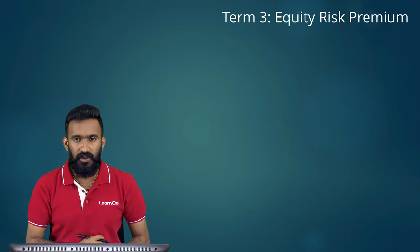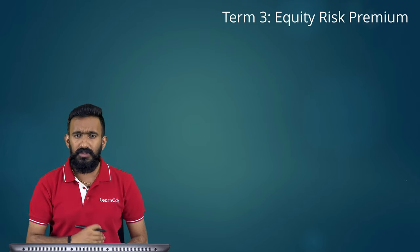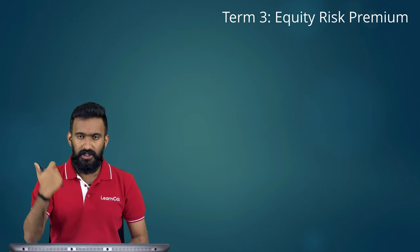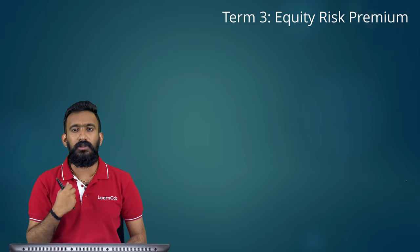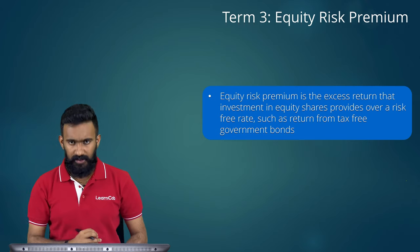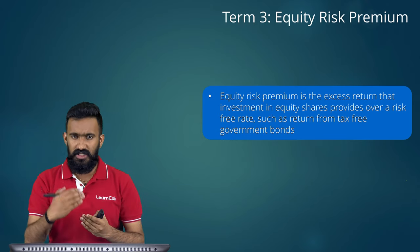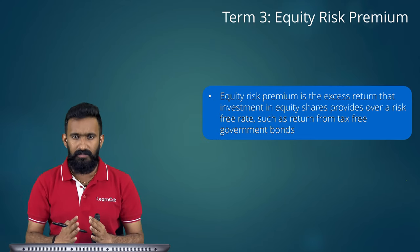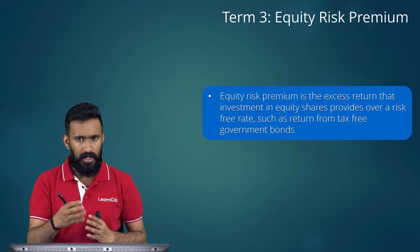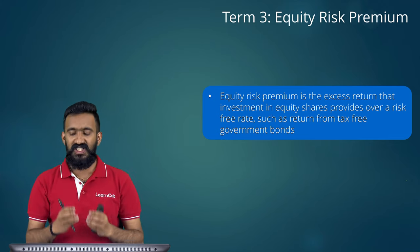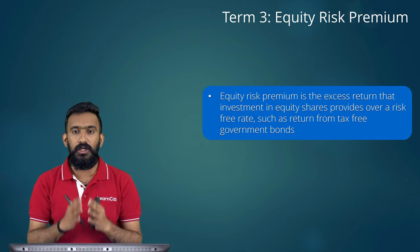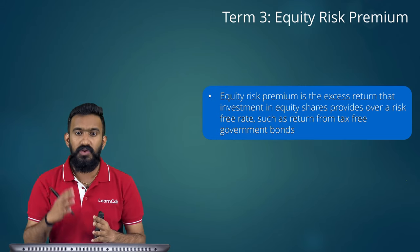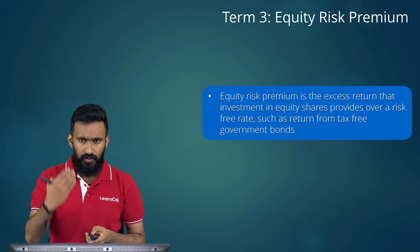Term three is equity risk premium. This is a detailed concept from CAPM, but in common language, equity risk premium is the excess return that investment in equity shares provides over the risk-free rate, such as the return from tax-free government bonds. An investor's return depends on how much risk they are ready to take.